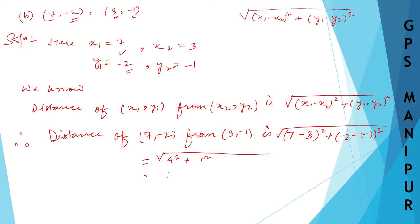So 4 squared is 16, 1 squared is 1. So 16 plus 1 is 17, and the answer is root 17.